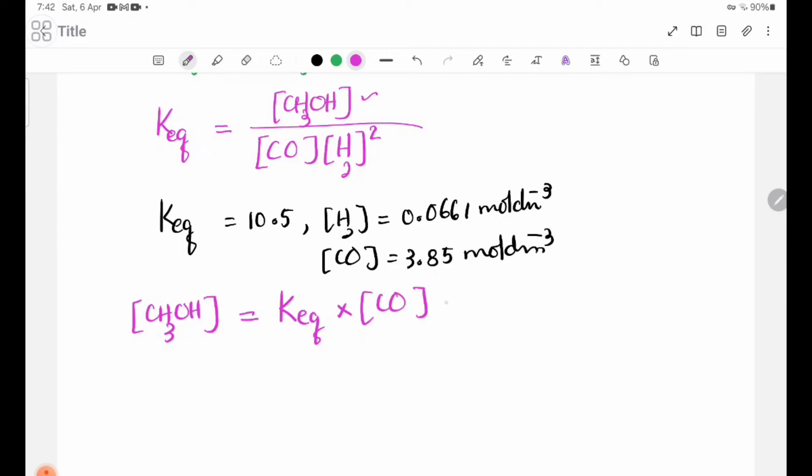Rearranging to solve for CH3OH concentration: CH3OH equals Keq times CO times H2 squared, which equals 10.5 times 3.85 times 0.0661 squared, giving 0.1766 molar per dm cubed.